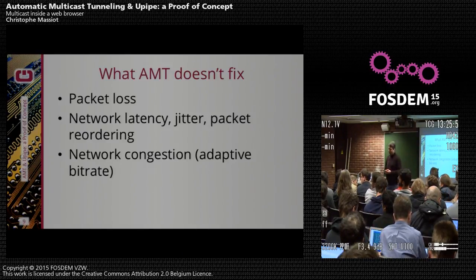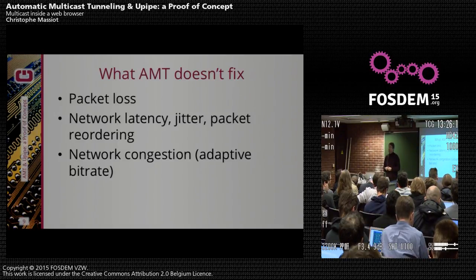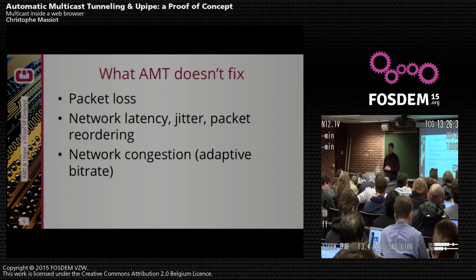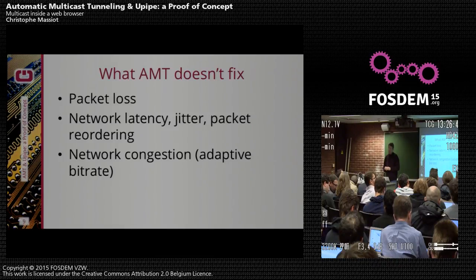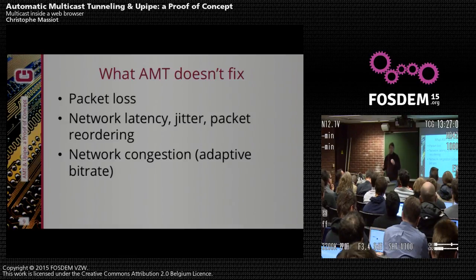Question about how AMT handles NAT traversal: it's unicast UDP, so you would need a module in the NAT. The protocol works by the client sending a packet to the relay, and the relay gives you the address of the machine to talk to in order to get the stream, which opens another circuit. Since you are the one initiating the connection, most NATs will handle it — when you send a UDP packet to a destination and the destination replies, it typically works.